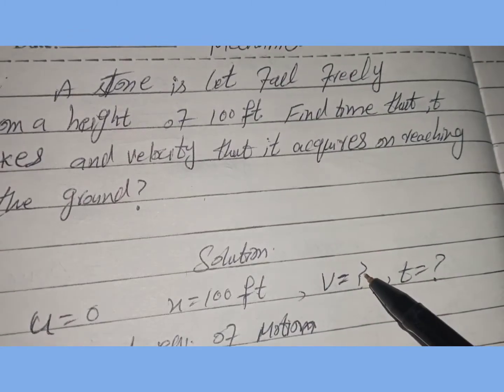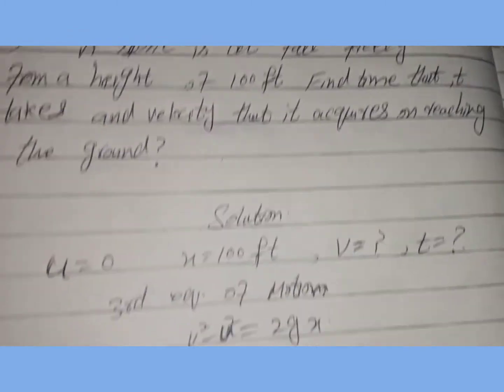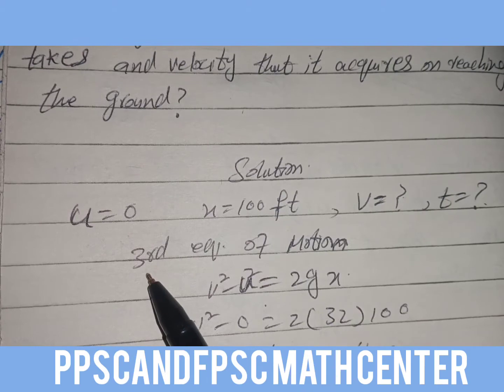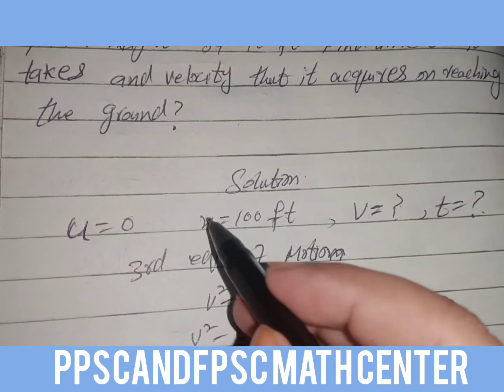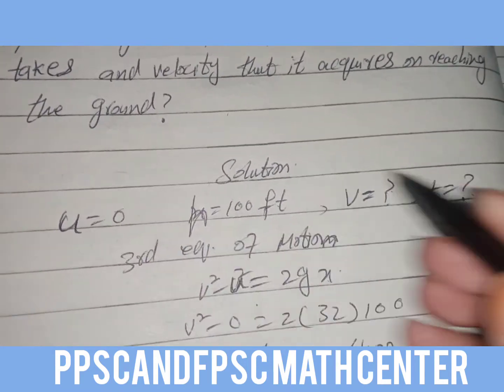Find speed v and time t. Third equation of motion: v² = u² + 2gh.